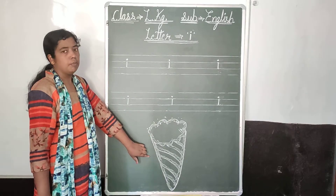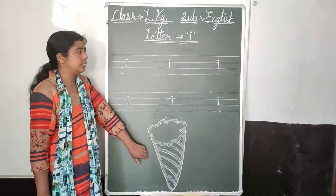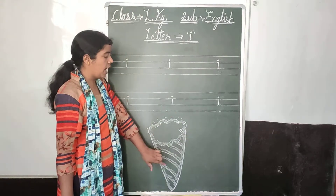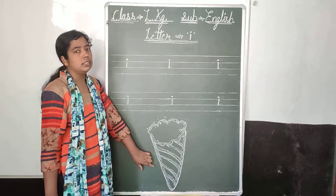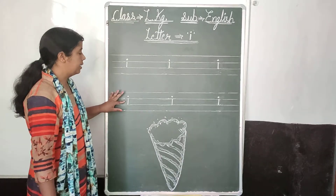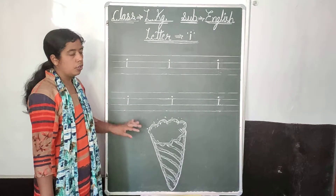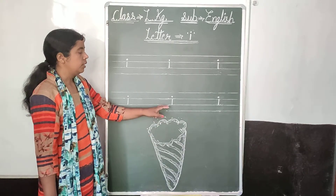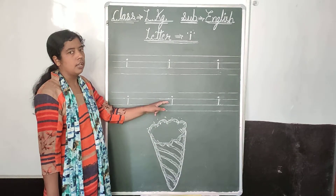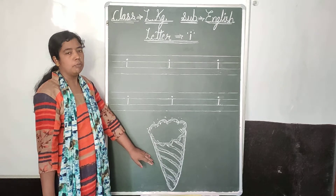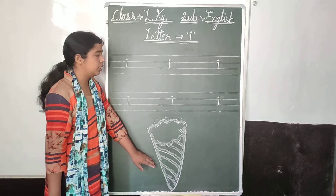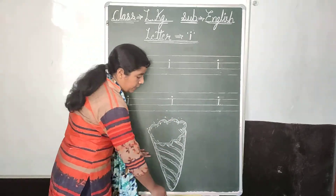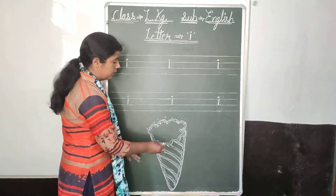Now repeat again. Ice cream means ice cream. This letter I. I for ice cream. Ice cream means ice cream. This letter I. I for ice cream. Ice cream means ice cream.